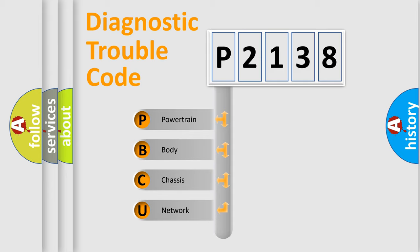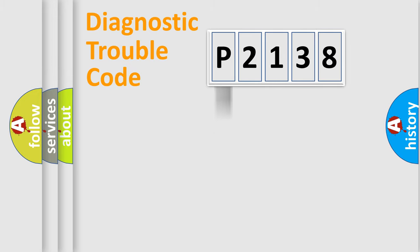We divide the electric system of automobile into four basic units: Powertrain, Body, Chassis, and Network. This distribution is defined in the first character code.